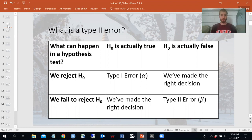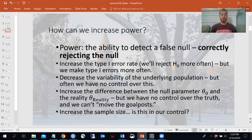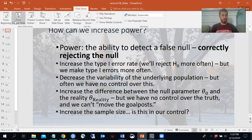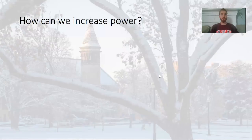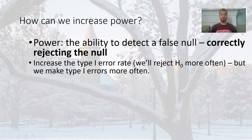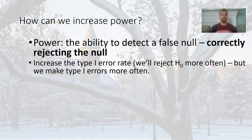Power, on the other side of that, is the ability to correctly detect the false null hypothesis — the ability to detect the false null. So we're correctly rejecting the null. You have to know what that definition is before we go forward at all, otherwise the next slides aren't going to make any sense. Remember, we're trying to correctly reject the null hypothesis.